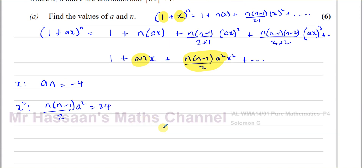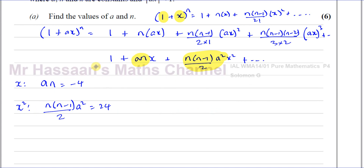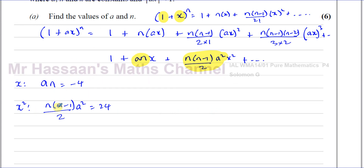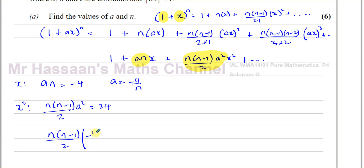We now have two equations with two unknowns, so we can use substitution. To find n first, I'll make a the subject of the first equation: a = −4/n. I can then replace a in the second equation. So we have n(n−1)/2 · (−4/n)² = 24.